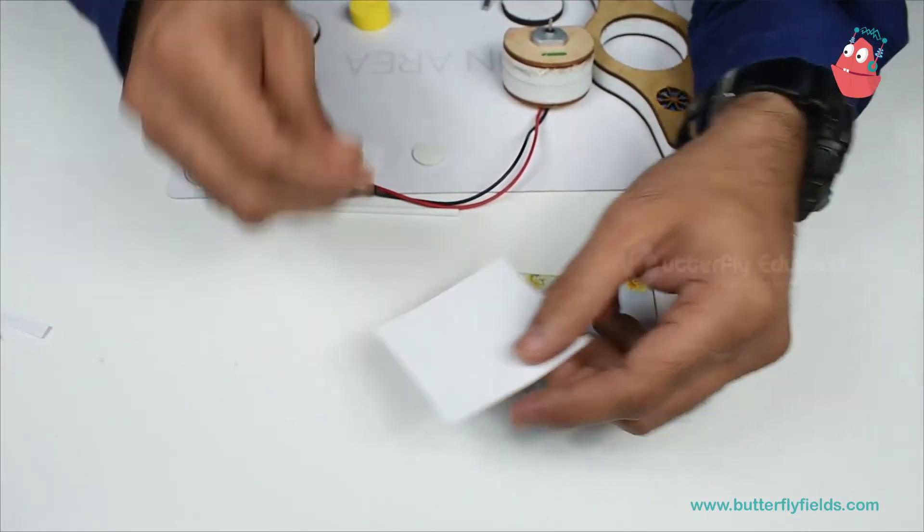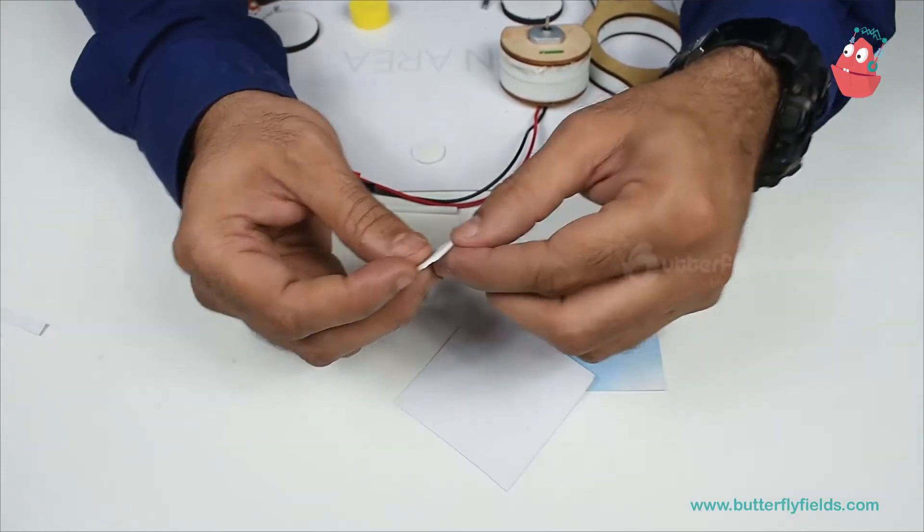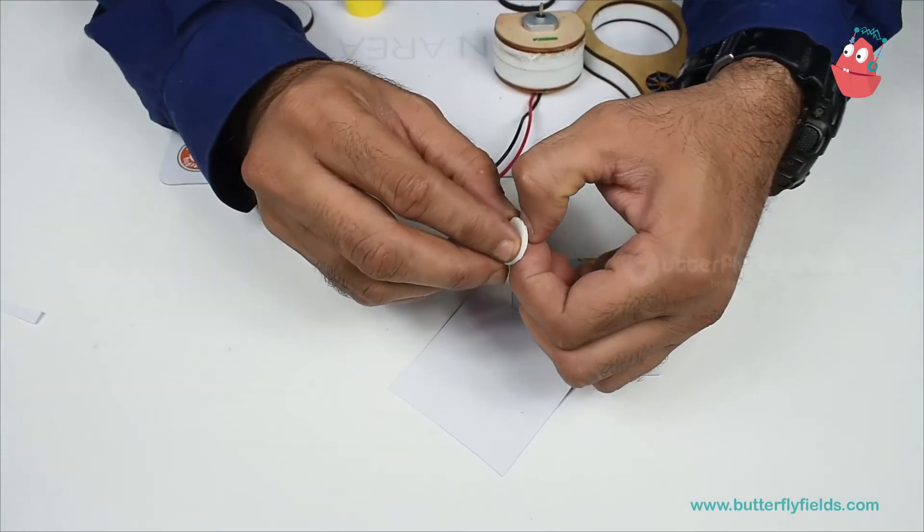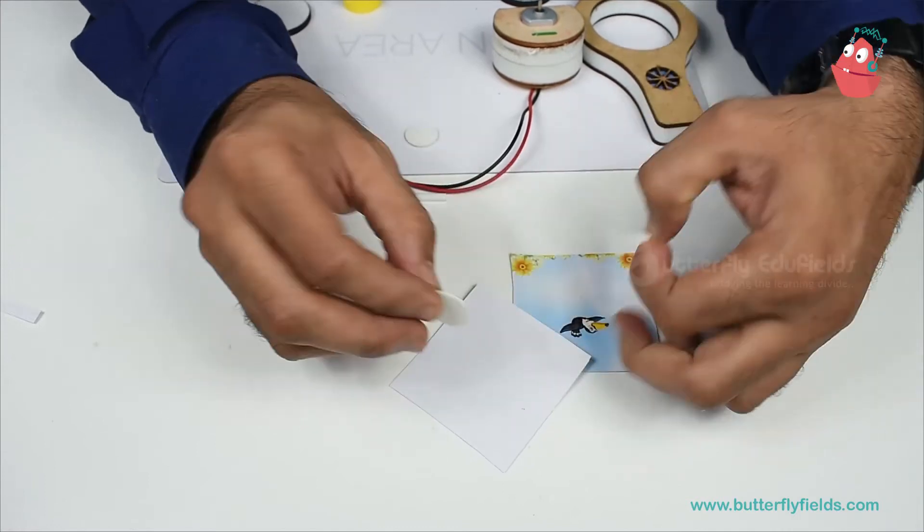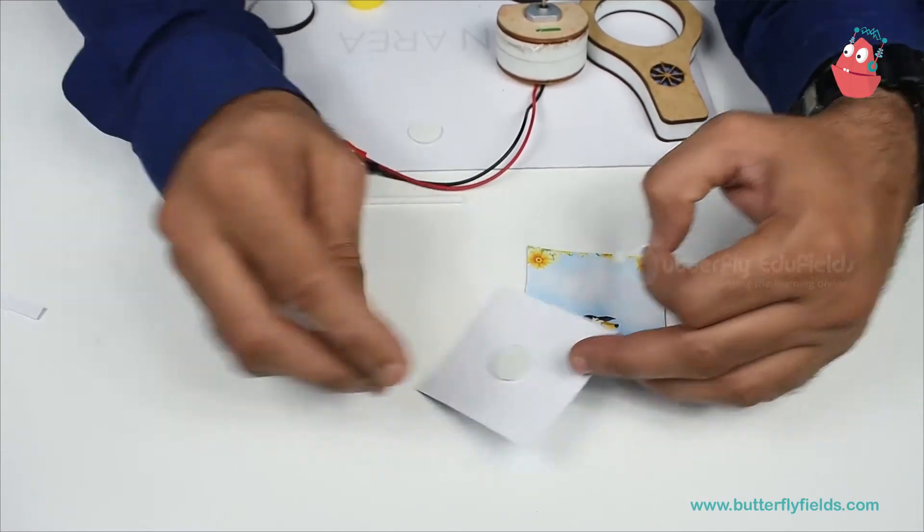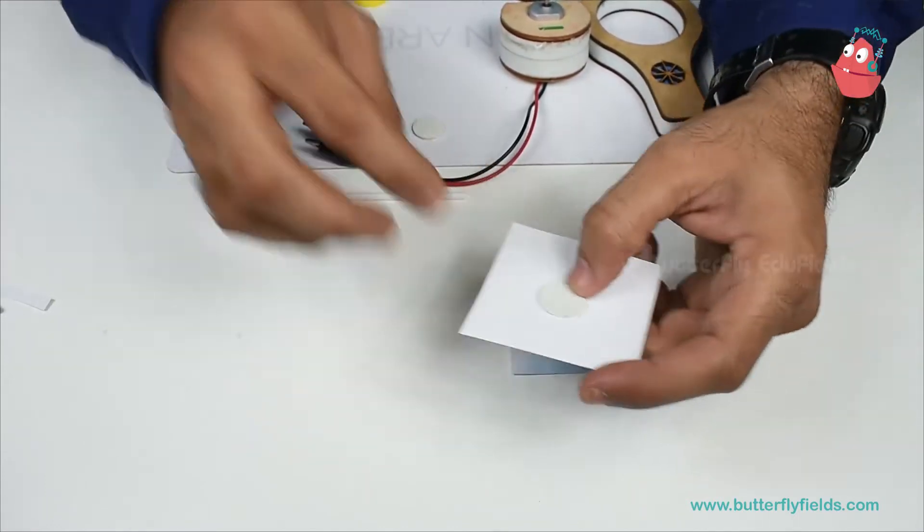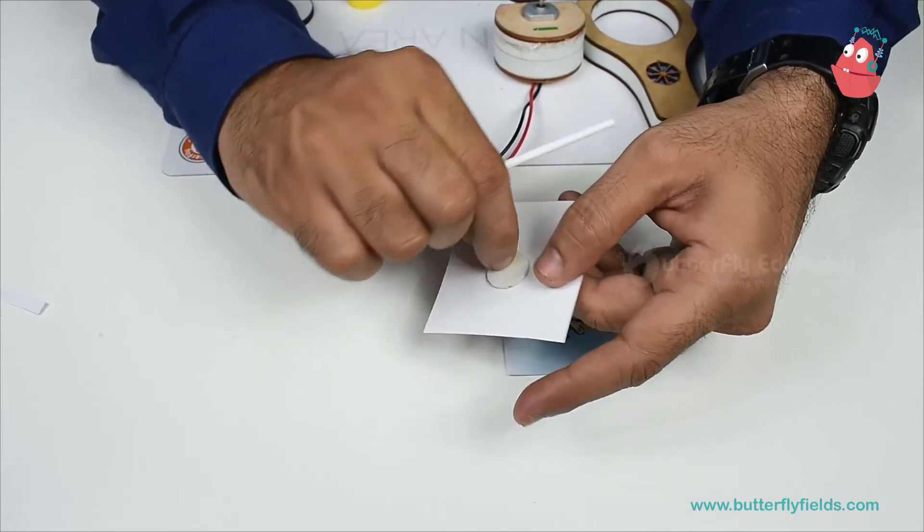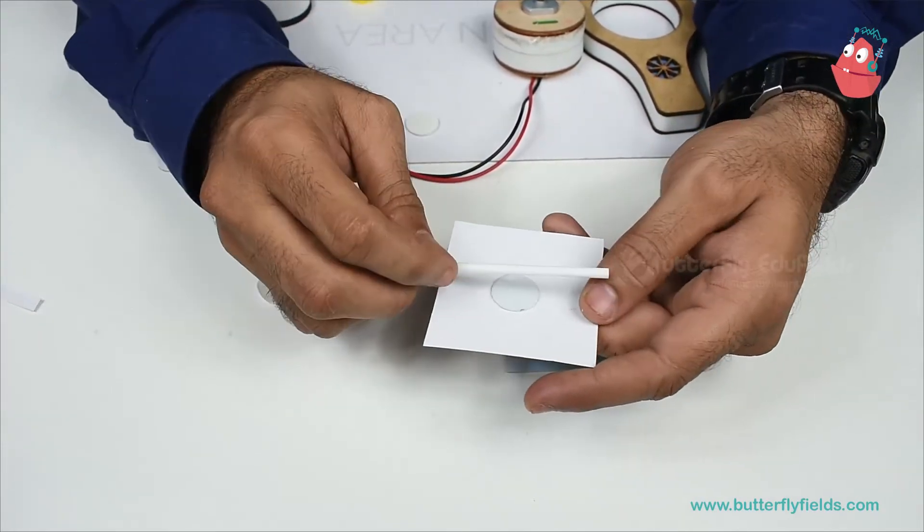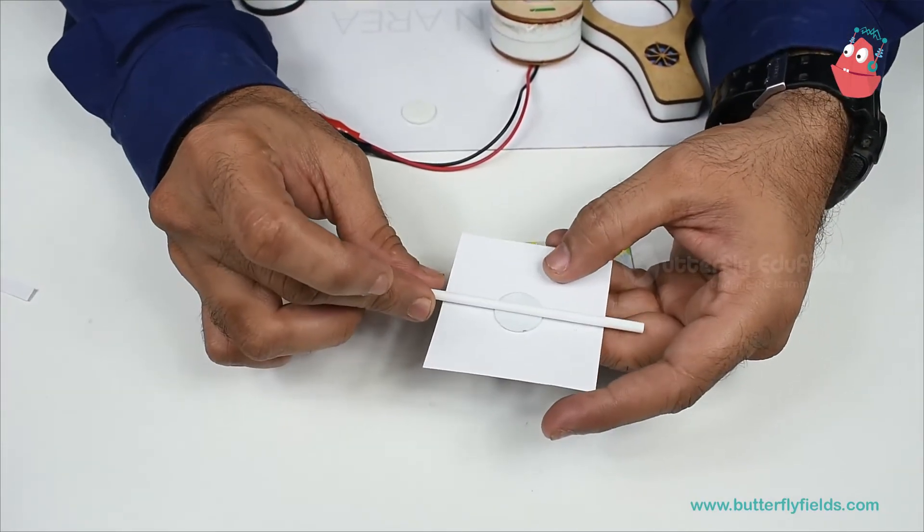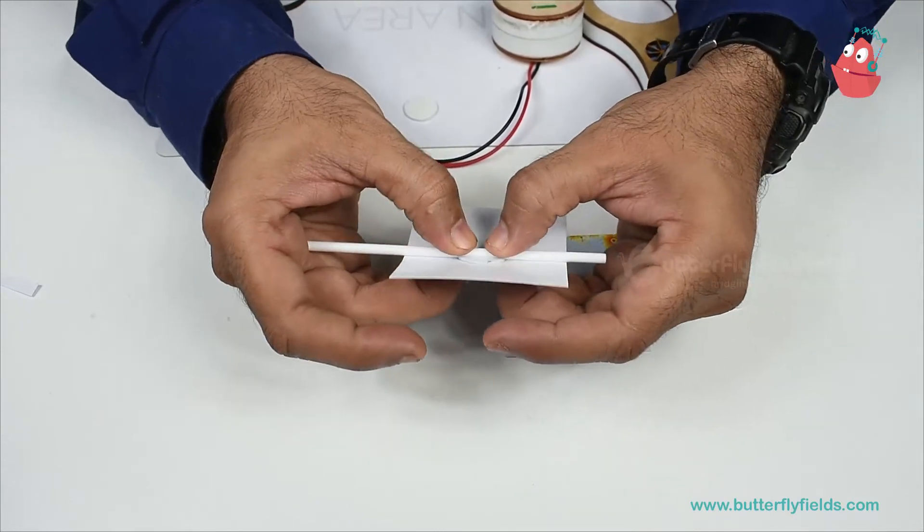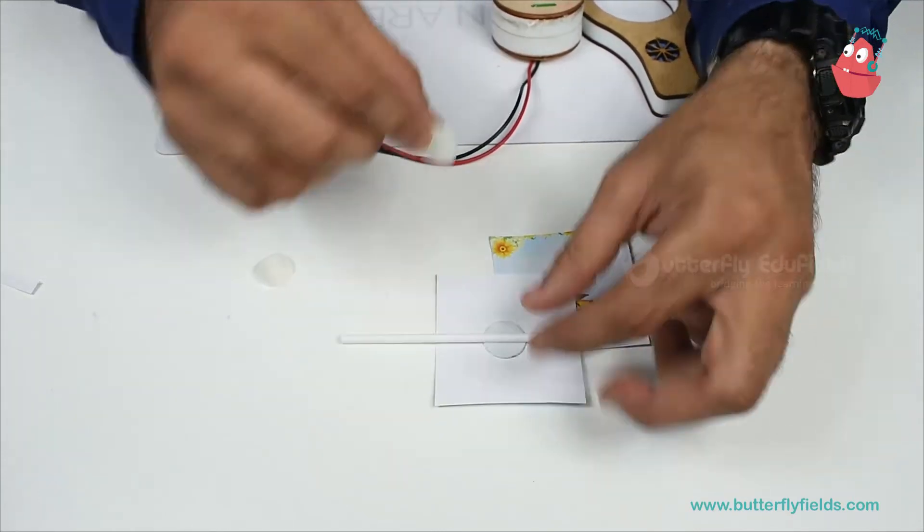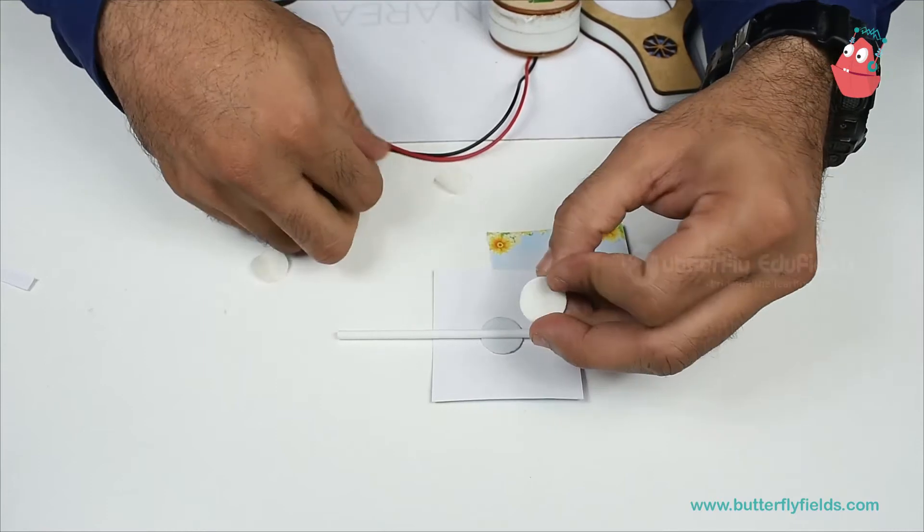Now I'll use the double-sided tape. Ensure you keep this at the center, because when you rotate it, it may wobble a lot. If it's at the center, it probably won't wobble. Then keep this straw at the center and use one more piece of tape.